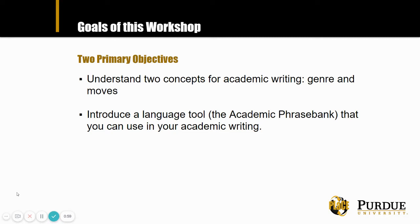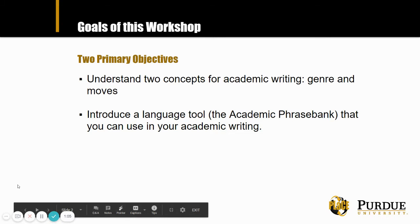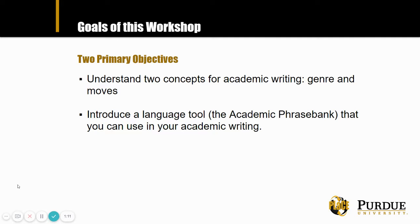Genre is a conceptual way to think about types of text or types of documents that are common in academic writing. Moves refers to the strategies — usually based around language — that writers use when writing a text. So genre is basically types of text, and moves are the strategic uses of language. The second objective is to introduce a language tool called the Academic Phrase Bank, which is an excellent way to continue to practice and use these concepts.